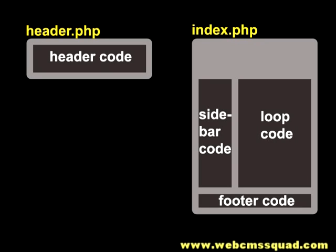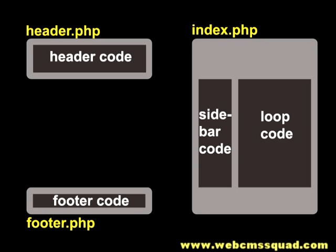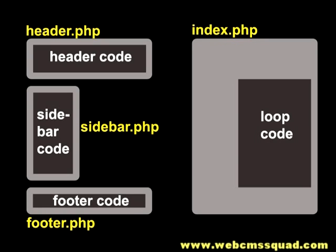You literally just grab that chunk of code out of your index.php and save it as a new file called header. You do the same thing for the footer code, as well as the sidebar code, as well as any other blocks that you may have there. So what ends up remaining in the index.php file is the code that's related to the loop, which is the main content area or the blog.